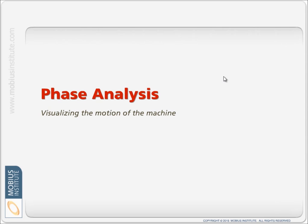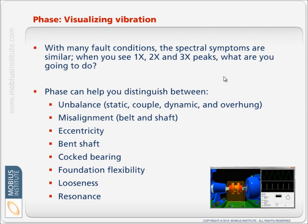Now, phase analysis is an additional type of analysis that tells us much more about the motion of the machine. If a machine's rotor is moving in a circular motion because of unbalance, phase tells us that. If there was misalignment, different sorts of forces, different sort of motion, phase tells us that. Eccentricity, bent shaft, cocked bearing and so on, the phase readings tell us what sort of motion the machine is going through. Therefore we can tell what forces are causing that motion and what sort of fault condition exists.